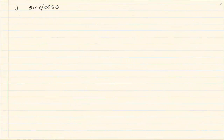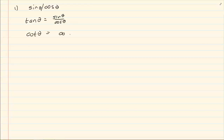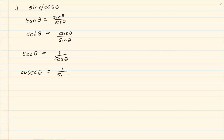When you are doing identities, the general rule is that you must try and convert everything to sin and cos. Now if you remember, tan theta is equal to sin theta over cos theta. Cot theta is equal to cos over sin. Then we have sec theta which is equal to 1 over cos theta. And we have cosec theta which is equal to 1 over sin theta.